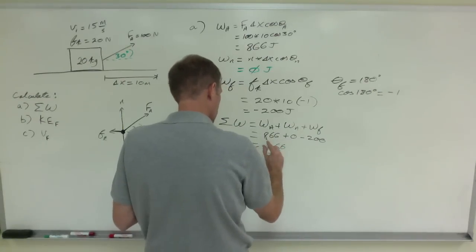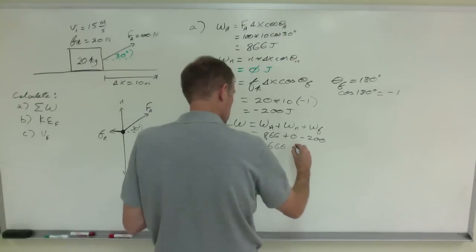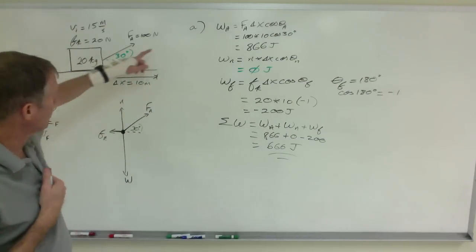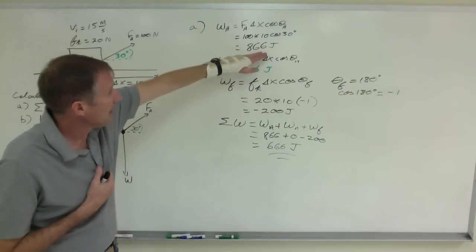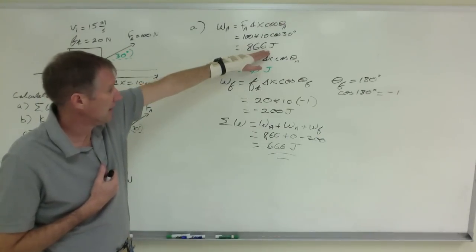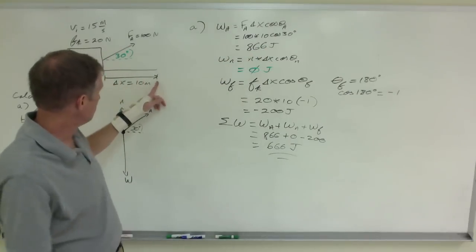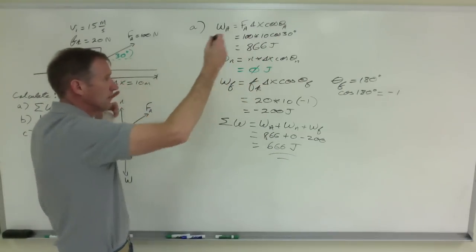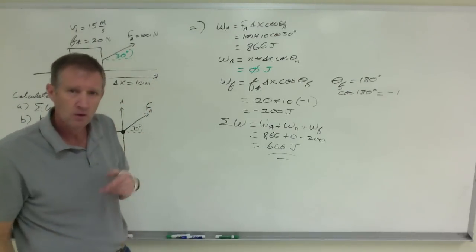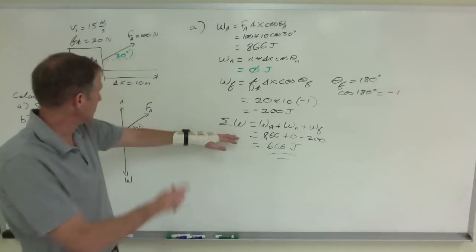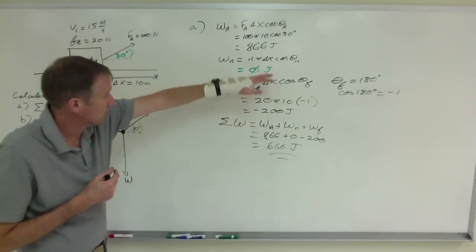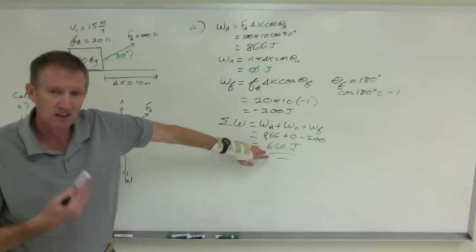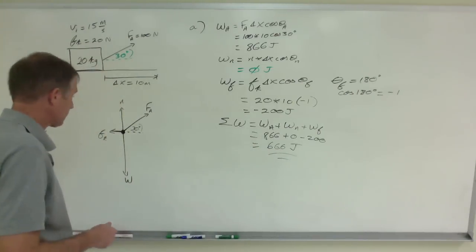So that's 866 plus 0 minus 200 which is 666 joules. What does that mean? It means that whoever's doing this work, they have used up 866 joules of energy. They have 866 joules of energy less at this point than they did when they started. Whoever's doing the work has 866 joules of energy less here than they did there. Where did it go? It went into the box. But the box after all of that doesn't have 866 joules of energy because friction took out 200 joules of energy. So the box afterwards only has a net gain of 666 joules of energy after all of that.